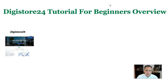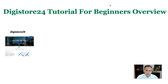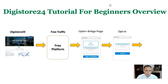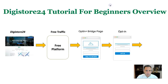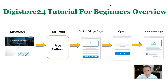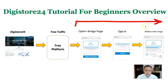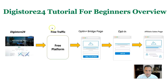Let's do a DigiStore24 tutorial overview so you understand what we're going to be doing. We're going to go to DigiStore and obtain the product, then I'll show you the best free traffic source. We're going to build a bridge page, an opt-in page, and an affiliate marketing page. From that opt-in point all the way to the affiliate page, everything is going to be automated — the prospect just clicks one thing and the whole funnel runs automatically.